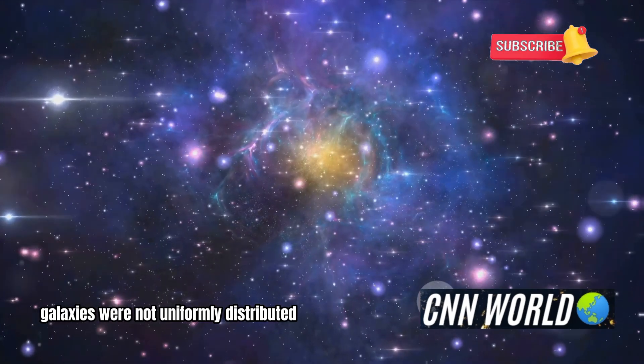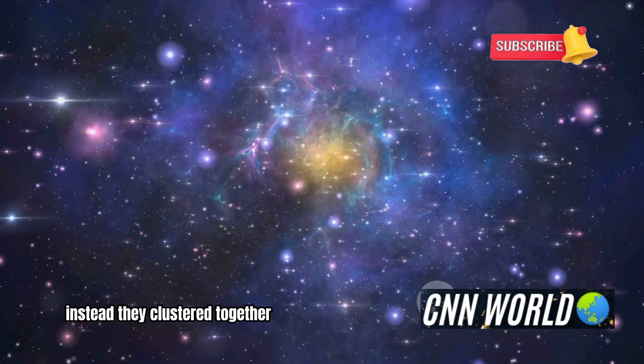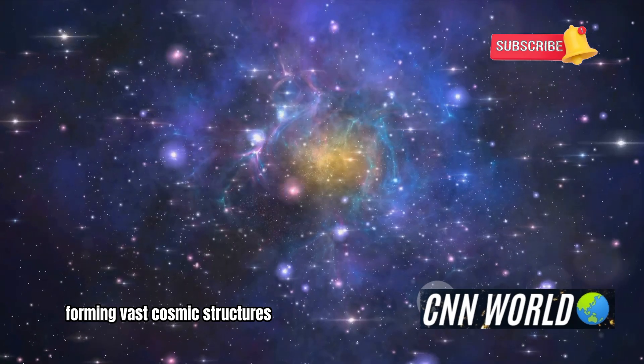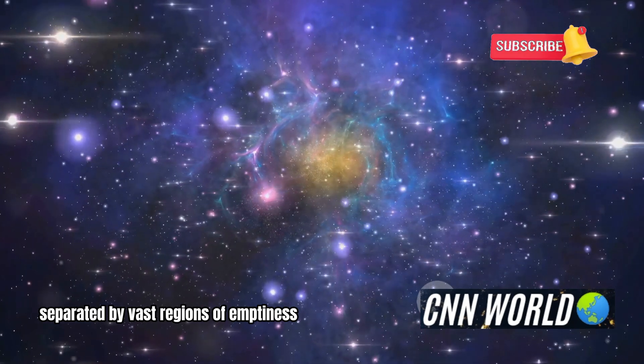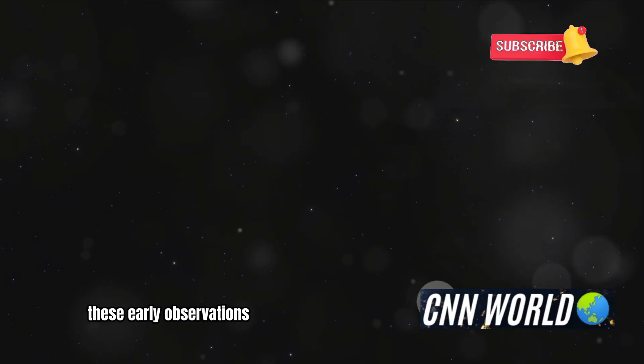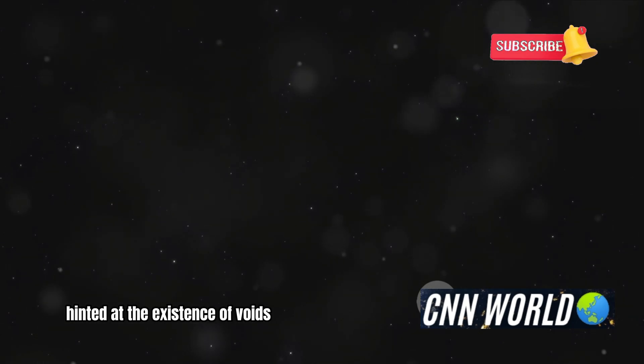Galaxies were not uniformly distributed, instead they clustered together, forming vast cosmic structures separated by vast regions of emptiness. These early observations hinted at the existence of voids.